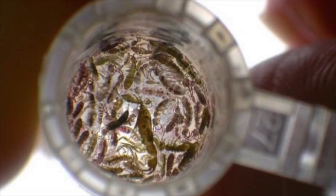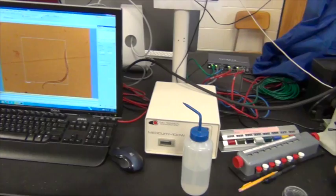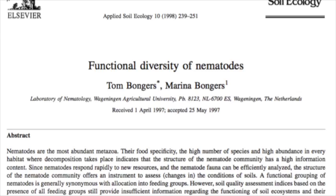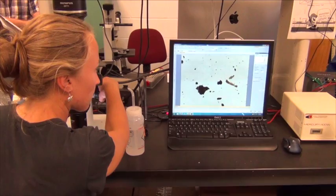Once we have extracted and isolated our desired fauna, we then need to identify them. Just like extraction, the method of identification depends on our scientific aims. Some studies identify fauna down to the species level, while others use coarser taxonomic categories or trophic groupings. We won't get that detailed today, but we will see some of the basics. Let's go back to the lab to get an idea of how it's done.